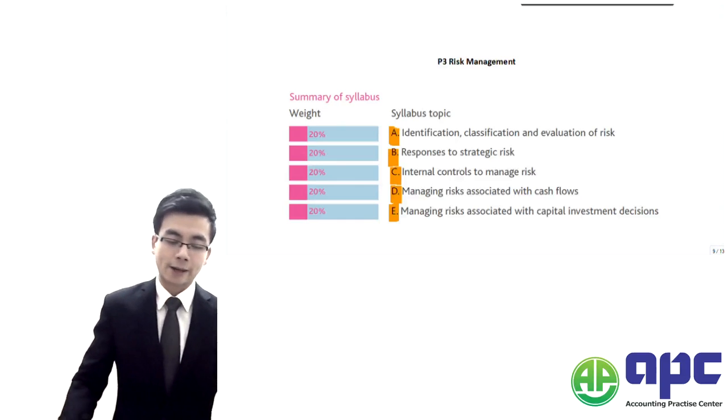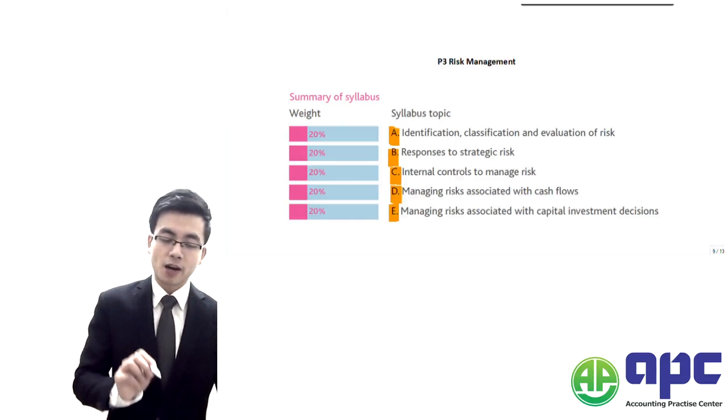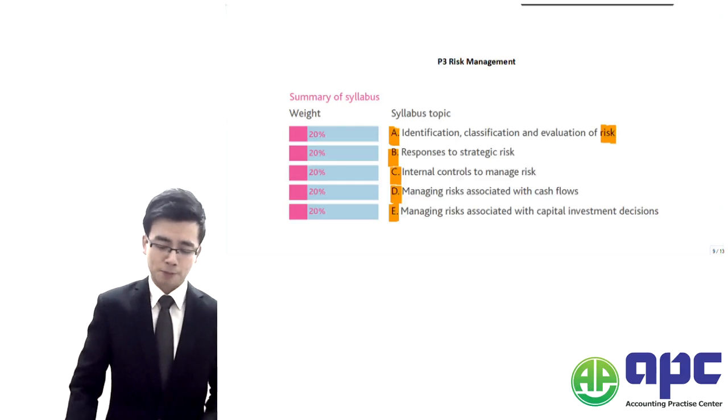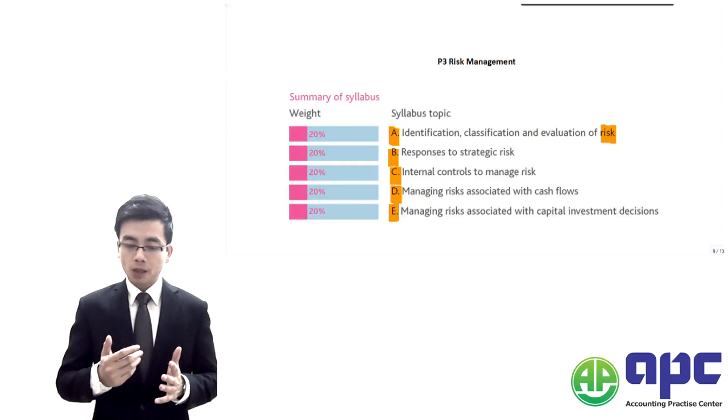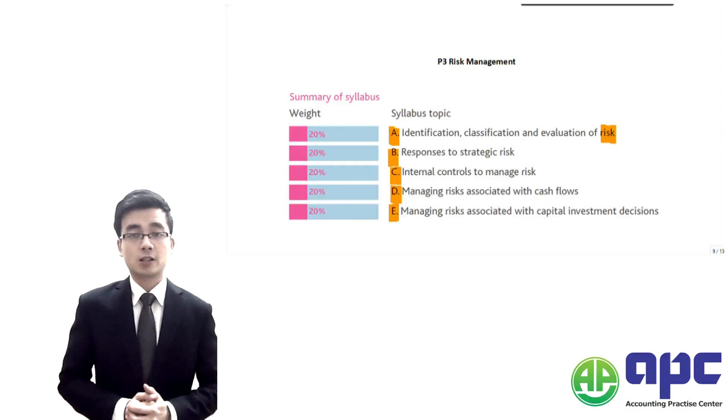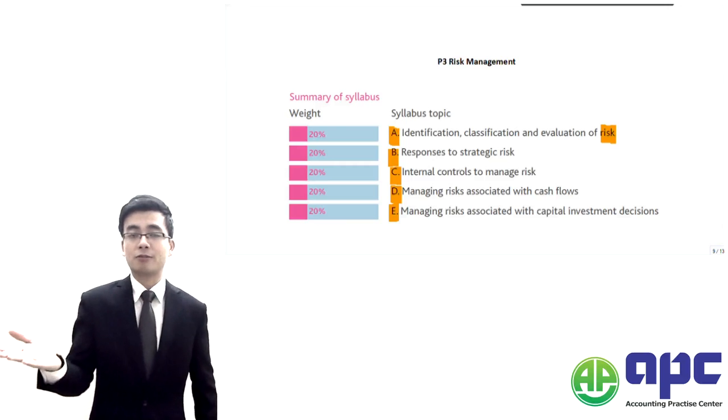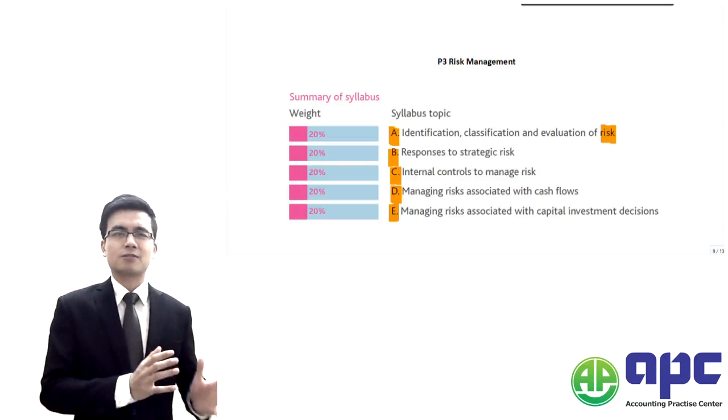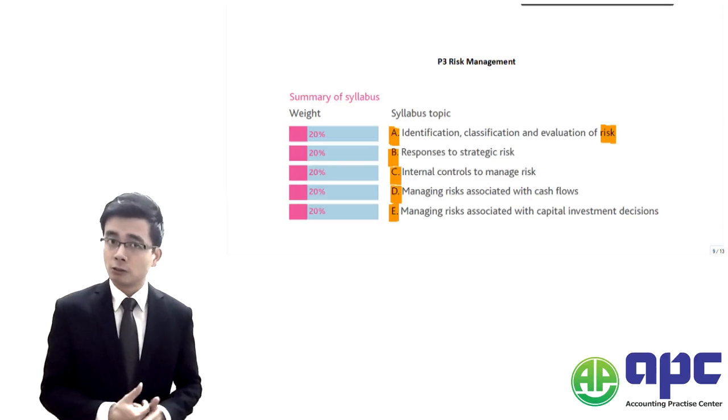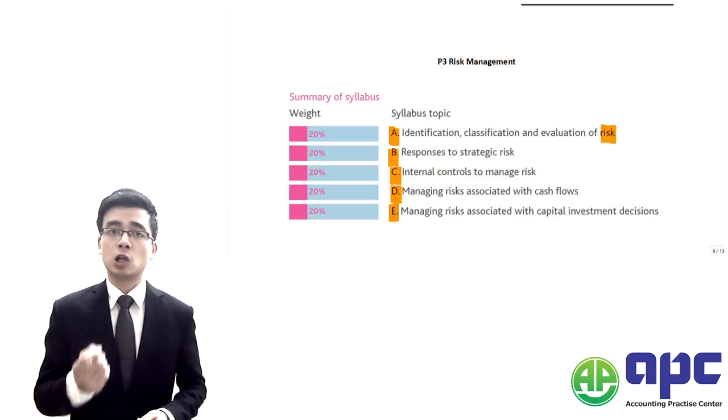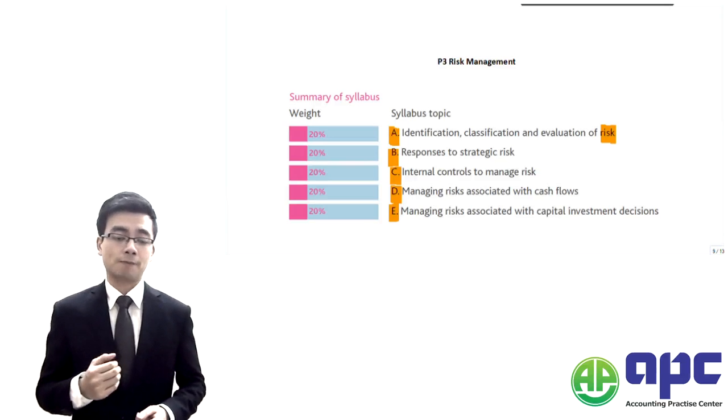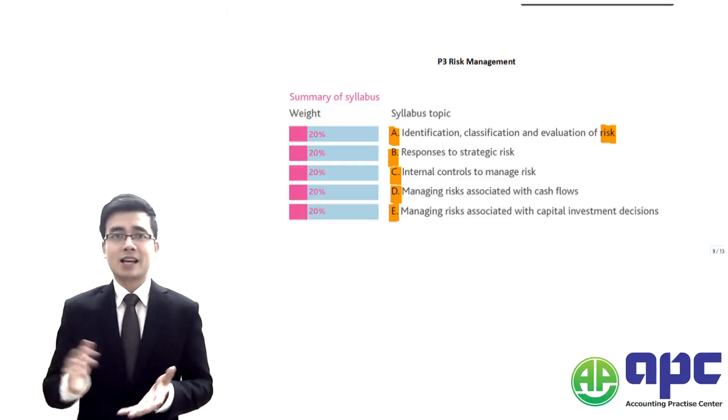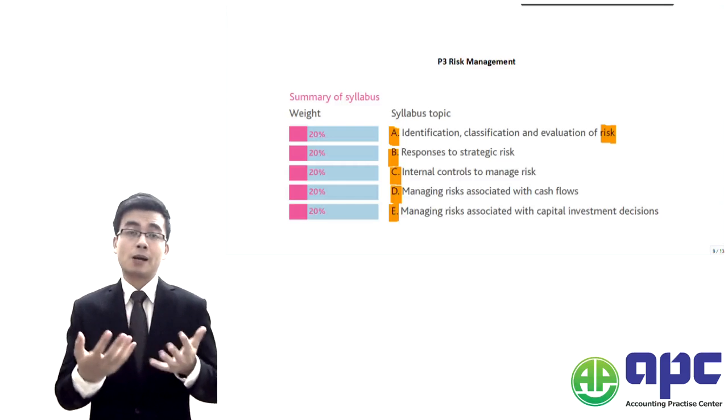Let's talk about section A, where we're going to identify, classify and evaluate risks. We'll start from the risk itself. Is risk a good thing or bad thing? Of course, to some extent, risk is a bad thing because I may run the risk of suffering a loss in a business activity. But to some extent, risk is a good thing.